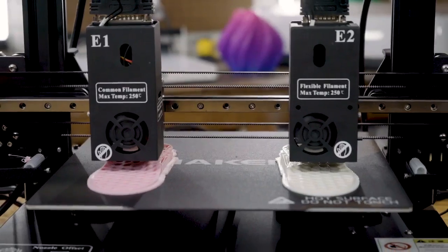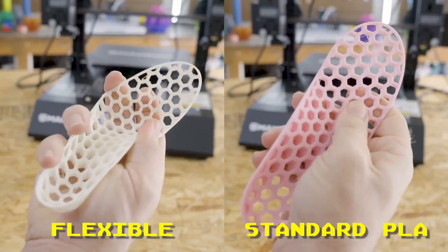Level 4: Go mirror mode to print both hard and flexible materials.